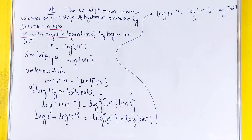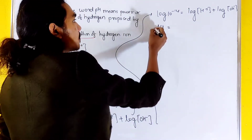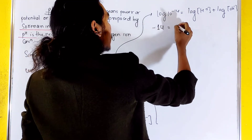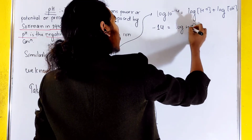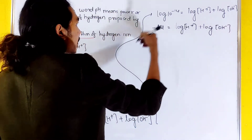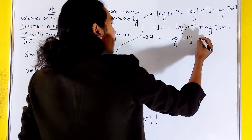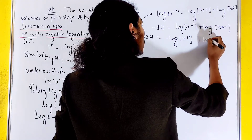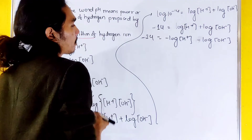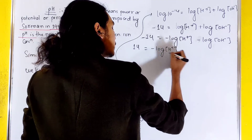Let's see how it works. In this condition, we have -14. We write log [H+] and log [OH-]. So -14 equals negative log [H+] plus negative log [OH-], which we can write using the symbol: 14 equals negative log [H+] plus negative log [OH-].